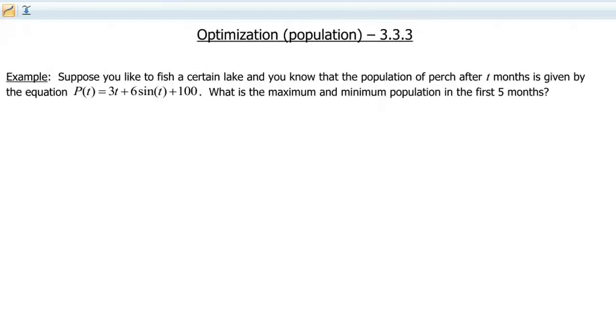Suppose you like to fish a certain lake, and you know the population of perch after t months is given by the equation P(t) = 3t + 6sin(t) + 100. I wanna know, using calculus, what is the maximum and minimum population in the first 5 months?